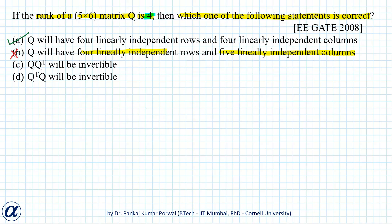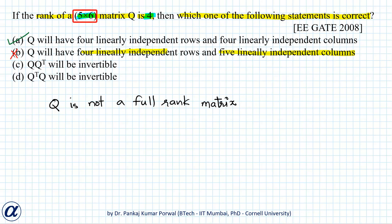Now for options C and D, we have to understand that if for a 5 by 6 matrix the rank is 4, then that matrix is not a full rank matrix. Because for a matrix to be full rank, it should have the maximum possible rank for its size. And because the size of Q is 5 by 6, the maximum possible rank for Q is 5. But because Q has rank 4, it is not full rank.